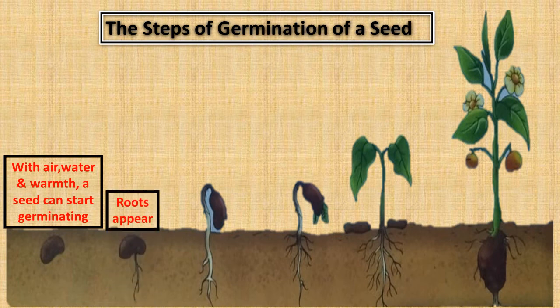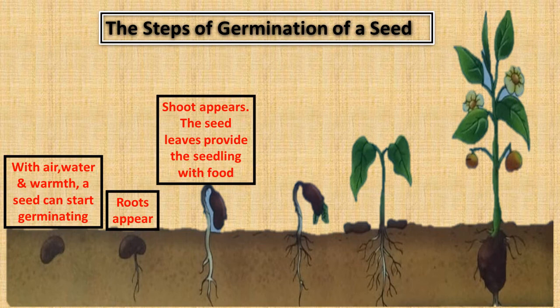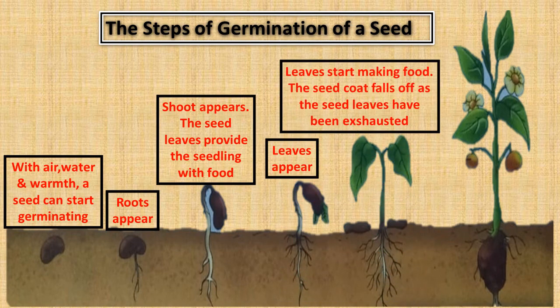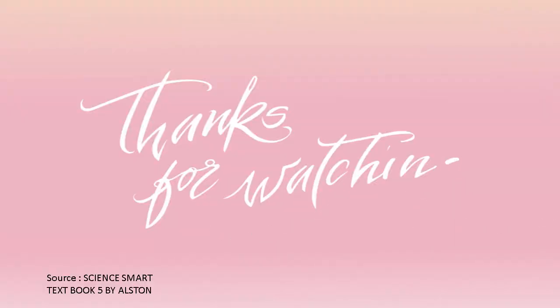Roots appear, then a shoot appears, and the seed leaves provide the seedling with food. Leaves then appear and start making food, and the seed coat falls off as the seed leaves are exhausted. The young plant has grown into an adult plant. Well done, thank you.